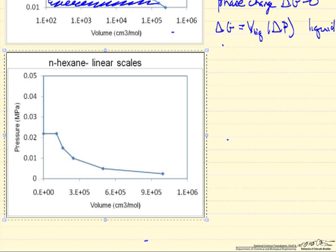Indeed, the same data are shown here, but now on a linear scale. So this is the vapor region, and now the area under the liquid curve is really insignificant.